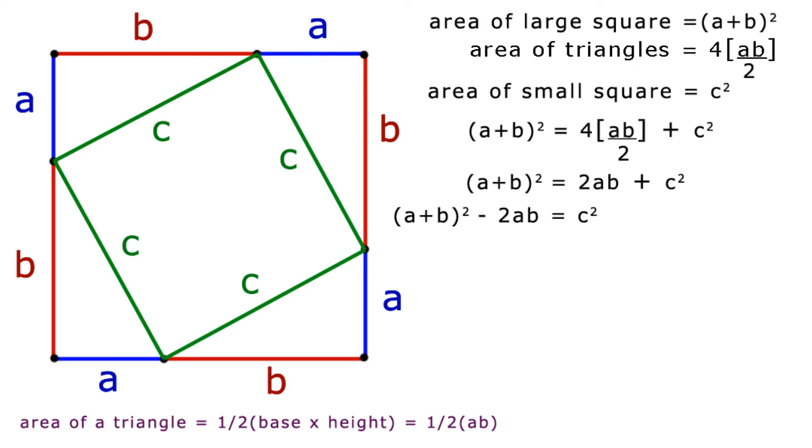Expanding the A plus B squared, we have A plus B times A plus B minus 2AB equals C squared. Multiplying this out, we get A squared plus AB plus B squared plus AB minus 2AB equals C squared.